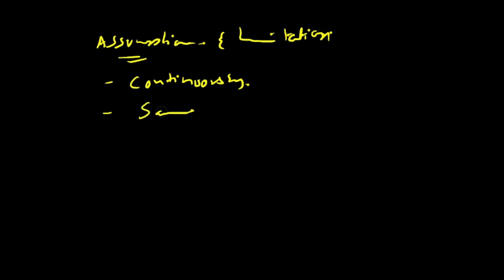This law also assumes that the product should remain the same throughout consumption. For example, if you are eating an apple you should keep eating apple only. But in real life we don't do that — we may eat apple along with other foods, soft drinks, or tea. It is unnatural to use the same product continuously just to verify the law.